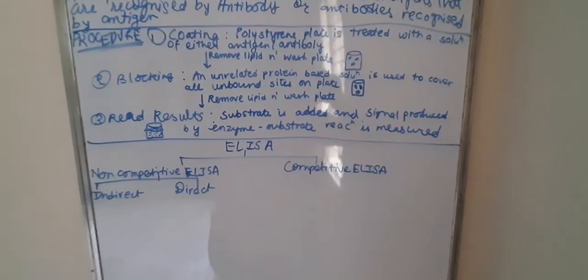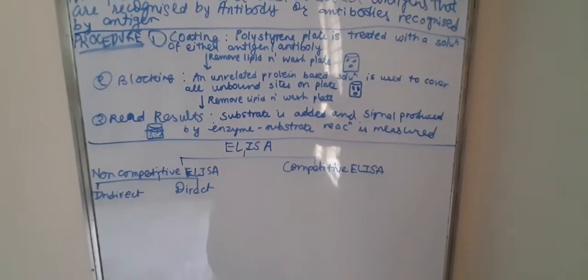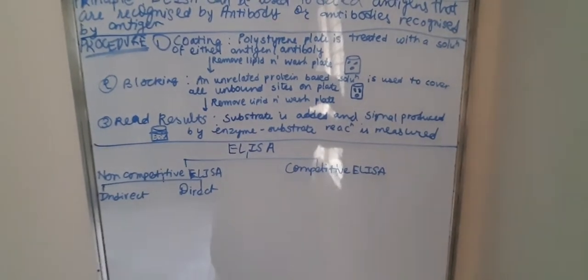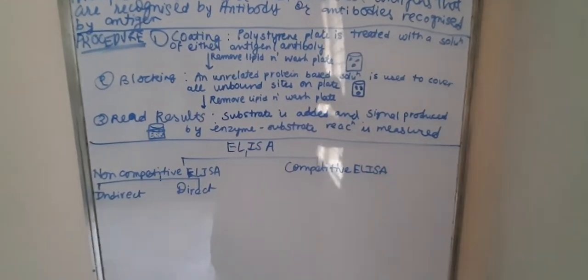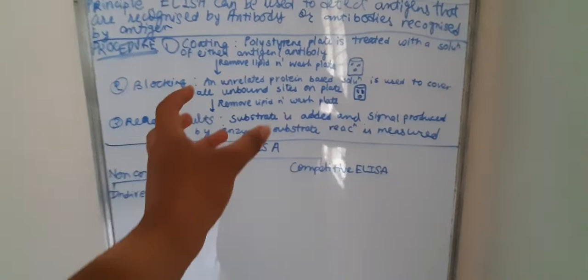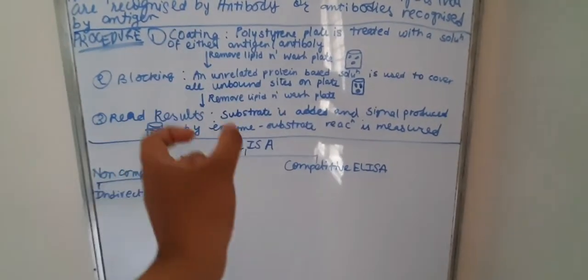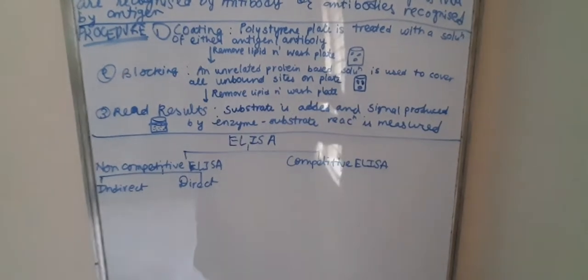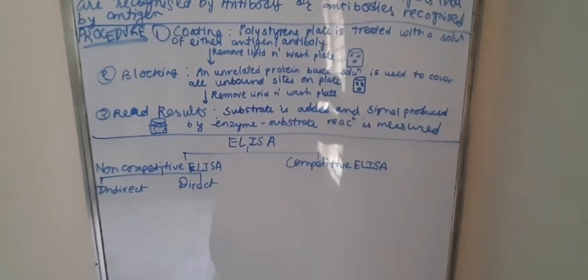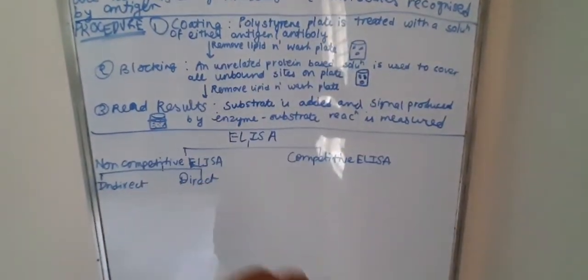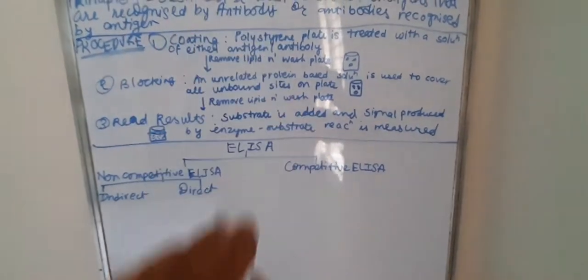Step three: read results. We add a substrate, and then a signal is produced by the enzyme-substrate reaction. That is how we measure the reaction.